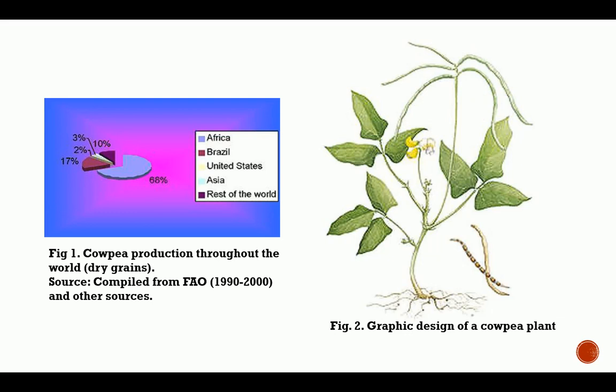This is a cowpea plant. You have trifoliate and alternate arrangement leaves. You have the pods — both the dry one and the fresh one — and their colors differ. The flower is most often yellow or purplish. You also have the roots and nodules on the roots, which help fix nitrogen in the soil.